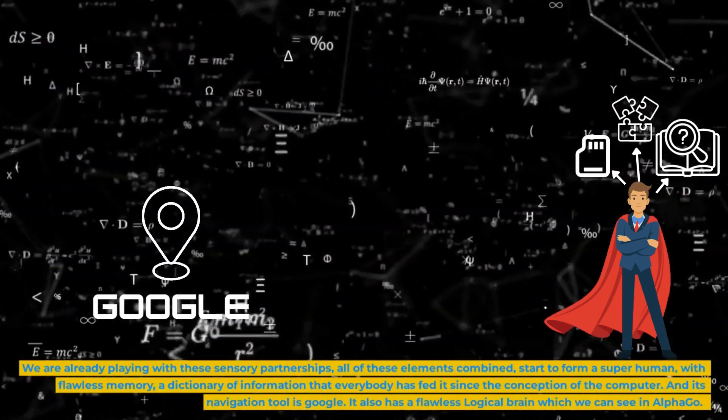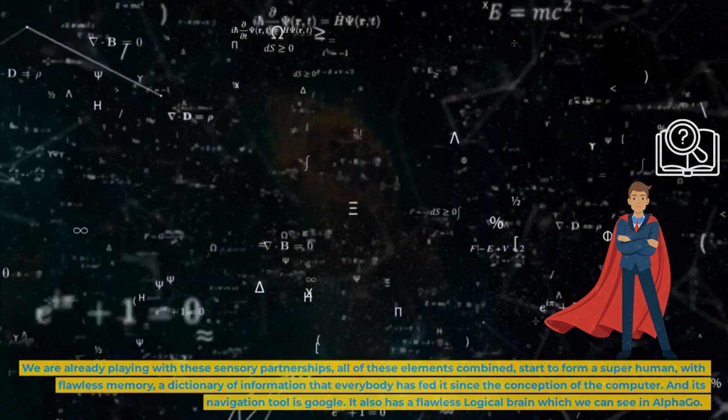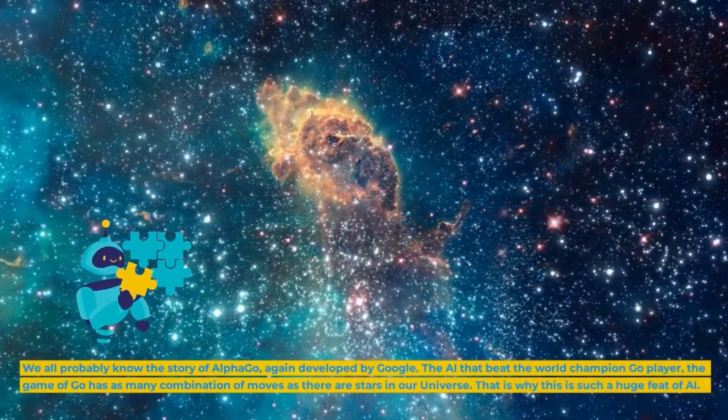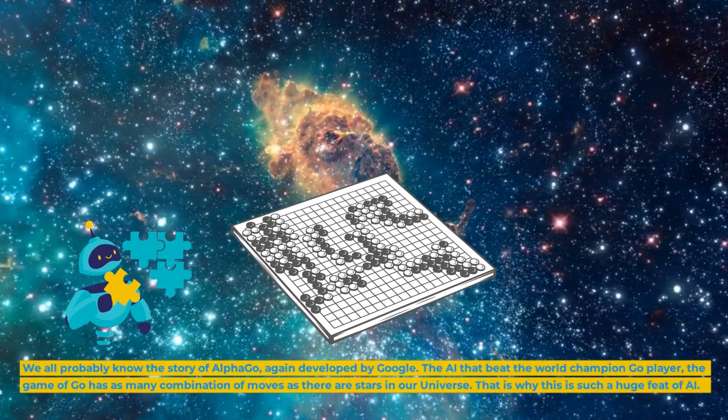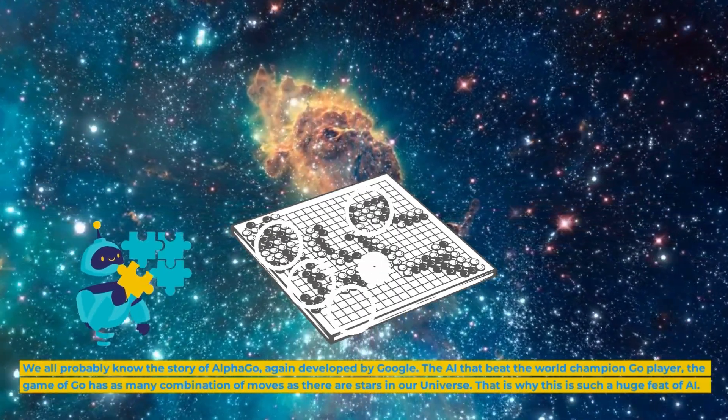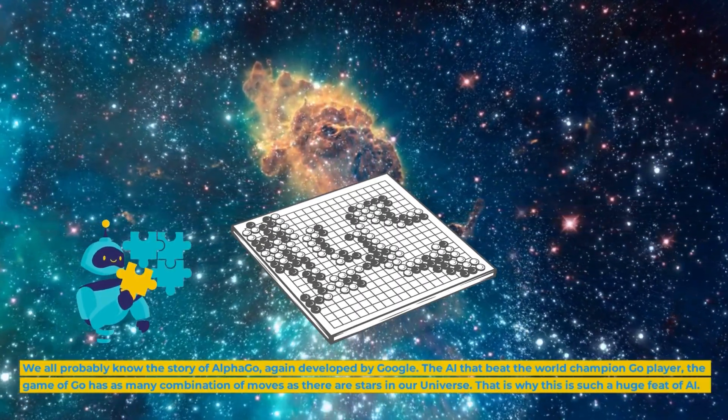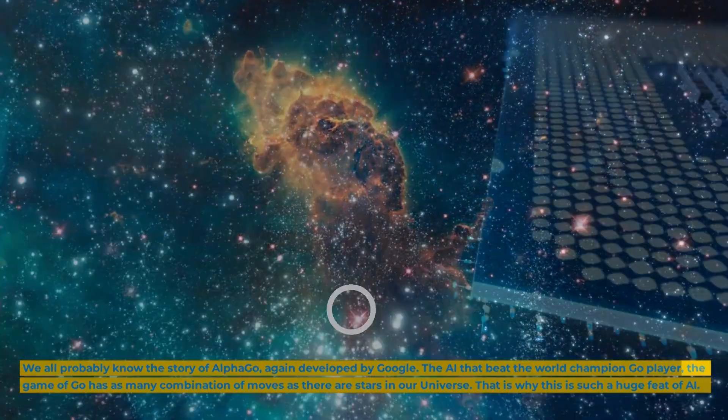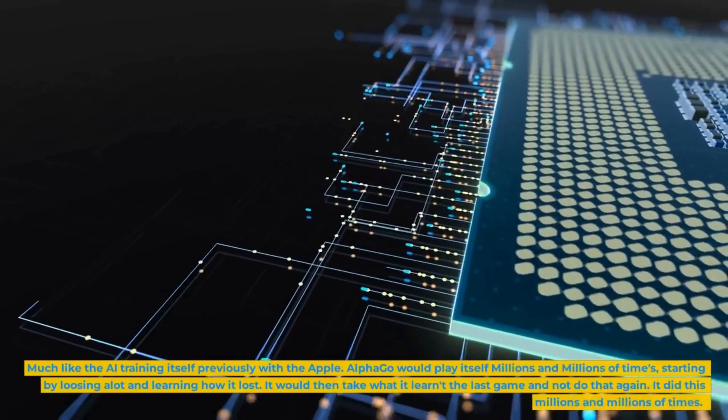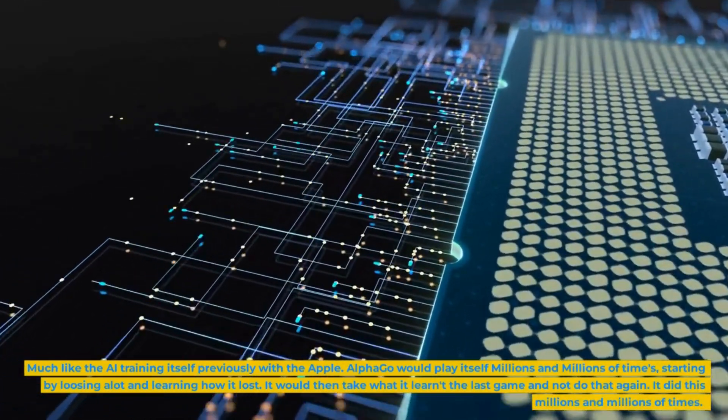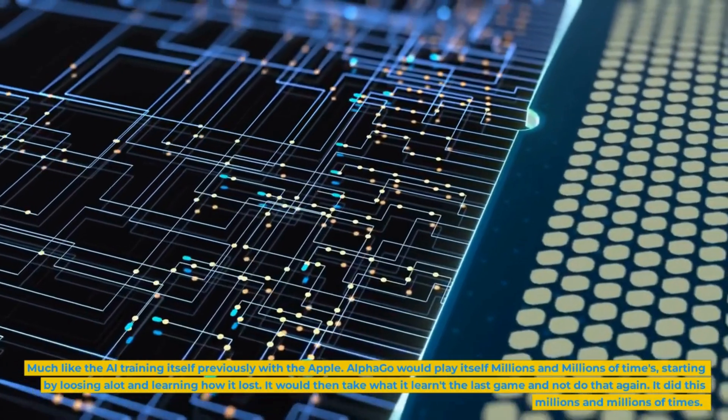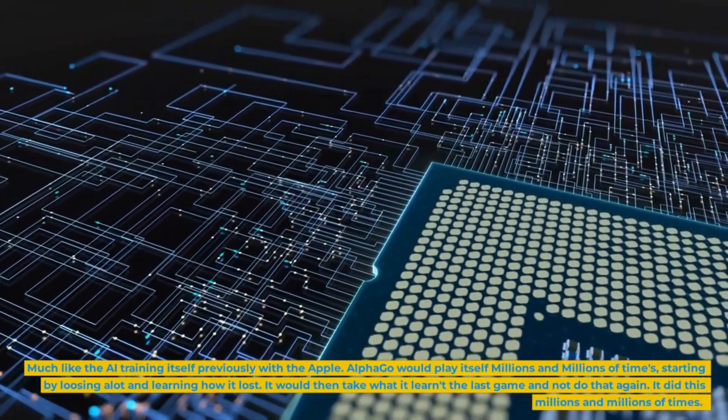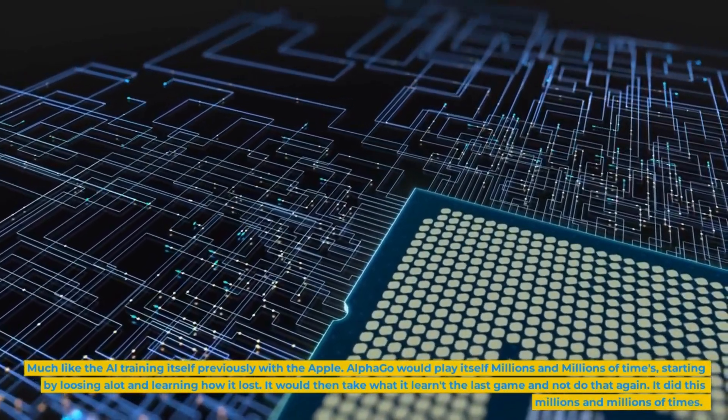It also has a flawless logical brain which we can see in AlphaGo. We all probably know the story of AlphaGo, again developed by Google. The AI that beat the world champion Go player. The game of Go has as many combination of moves as there are stars in our universe. That is why this is such a huge feat of AI. Much like the AI training itself previously with the Apple, AlphaGo would play itself millions and millions of times, starting by losing a lot and learning how it lost. It would then take what it learned the last game and not do that again. It did this millions and millions of times.